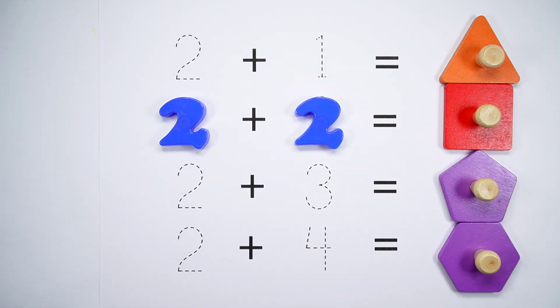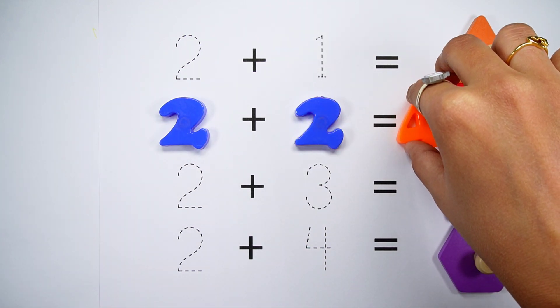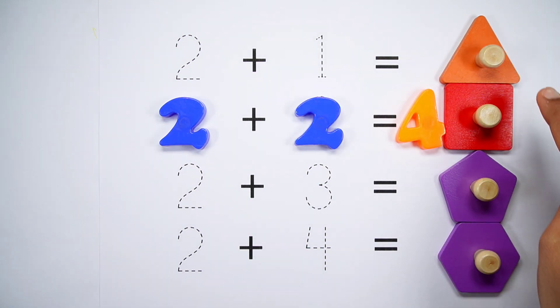2 plus 2 equals 4. Square, a square has 4 sides.